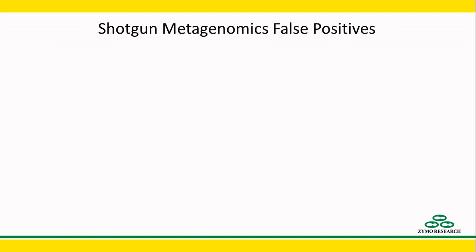Moving on to false positive species calling. Again, the quality of shotgun databases plays a critical role here. Unless there is a perfect representative genome in the reference database for a microbe sequenced, the bioinformatics analysis is likely to predict the existence of multiple closely related genomes.